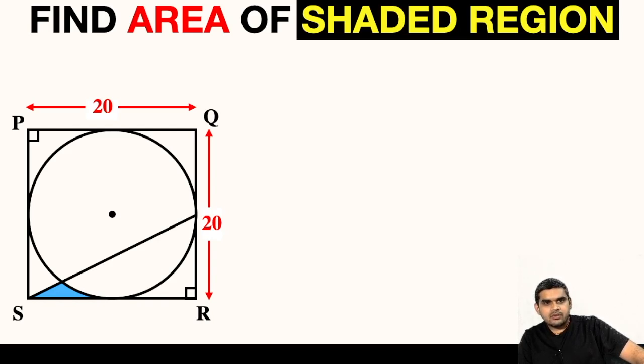In the figure we have a square whose each side is 20 units and we are asked to find the area of this small shaded region.